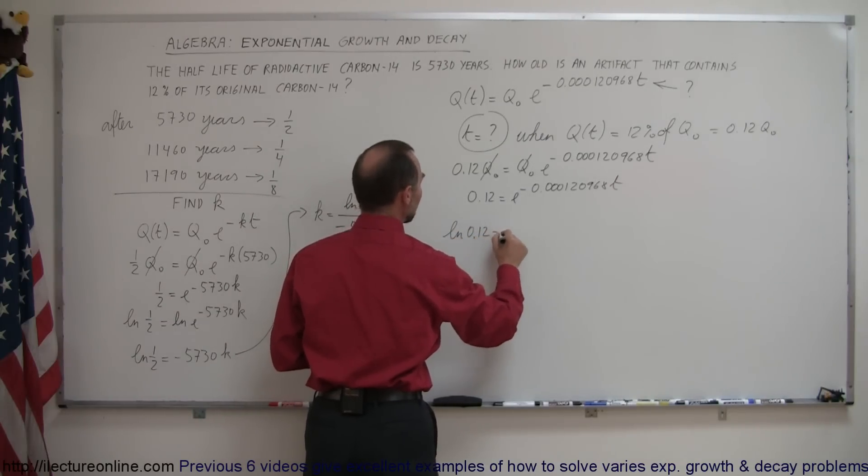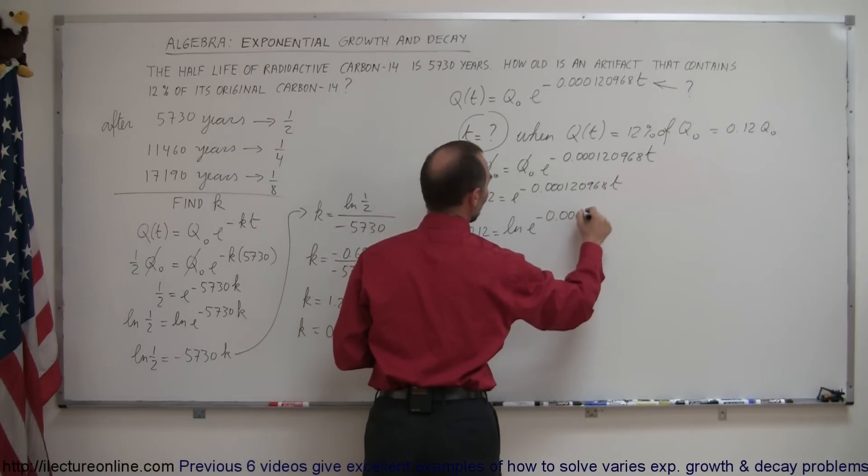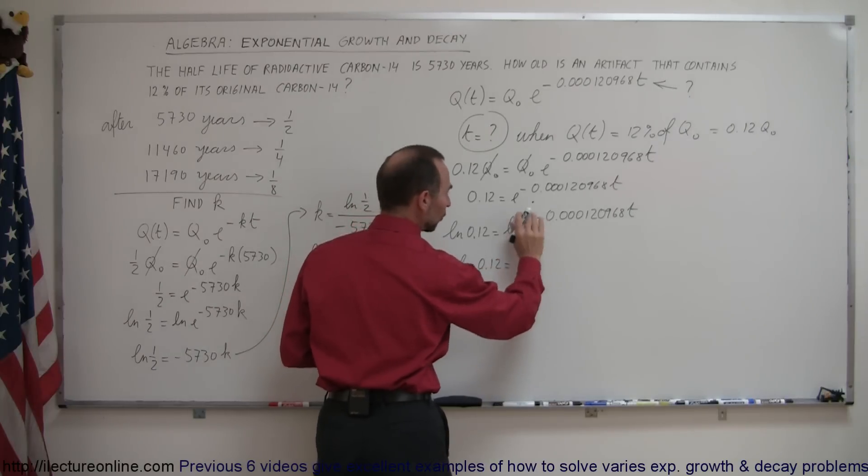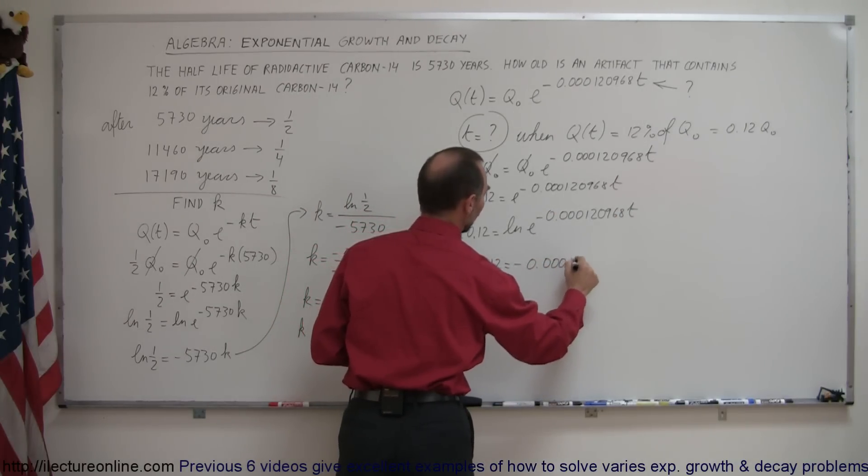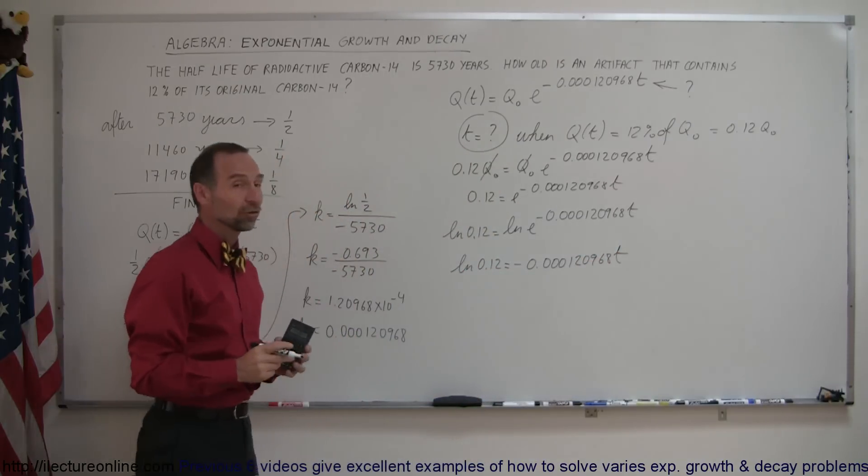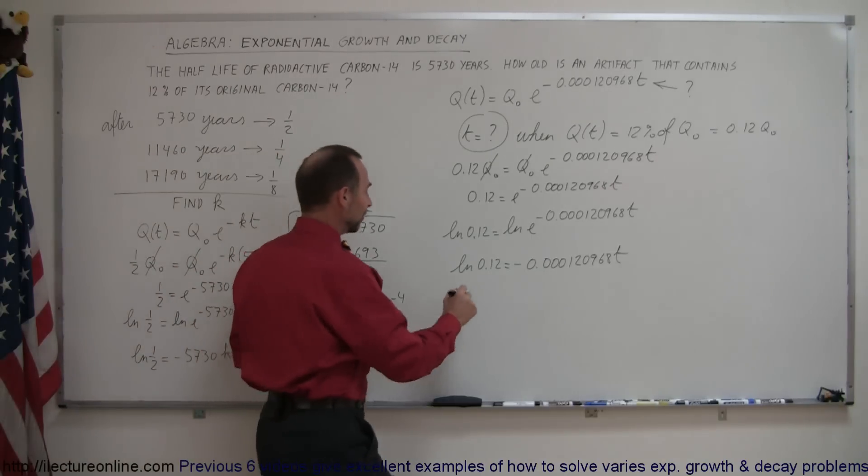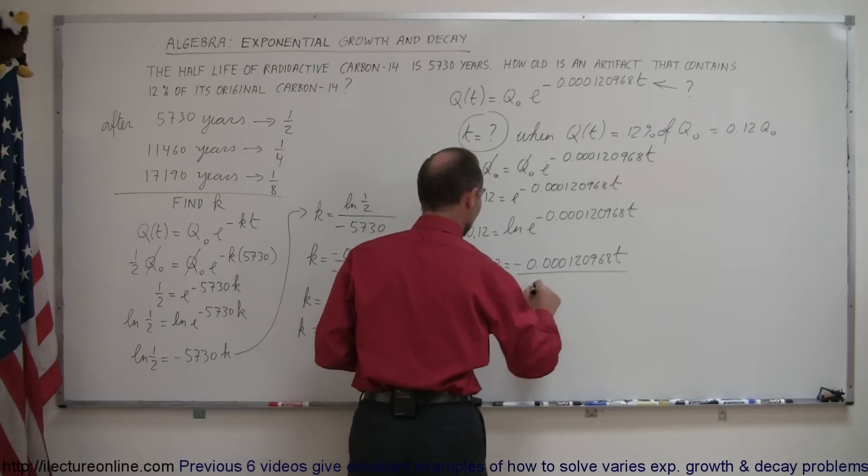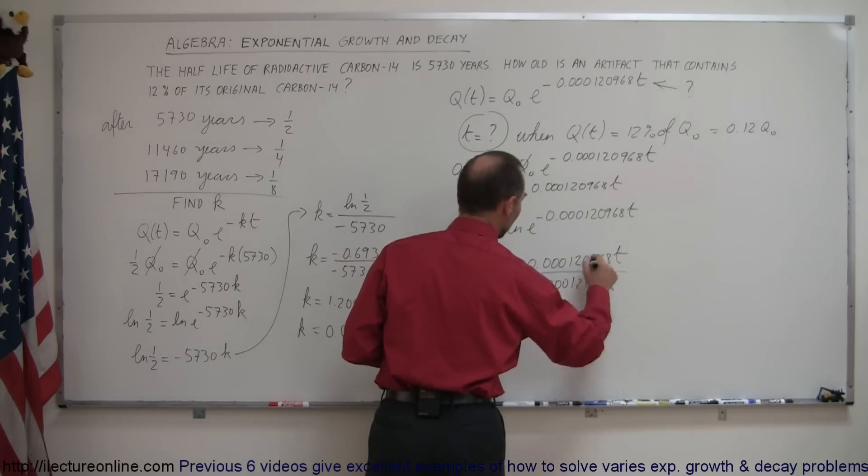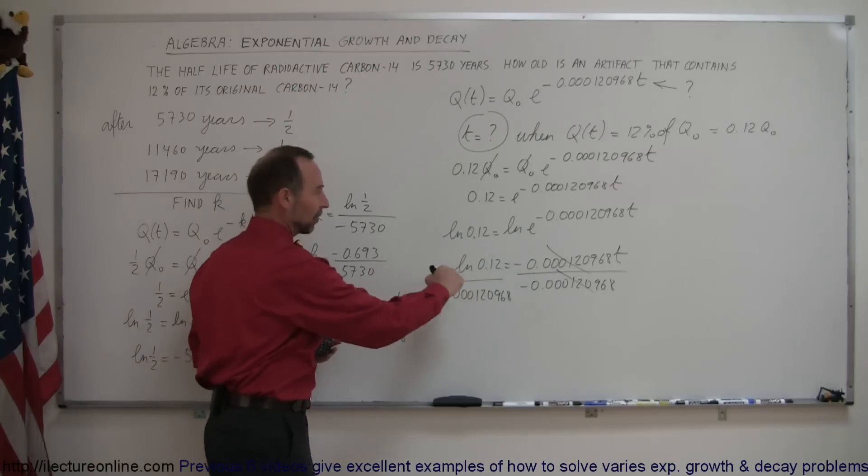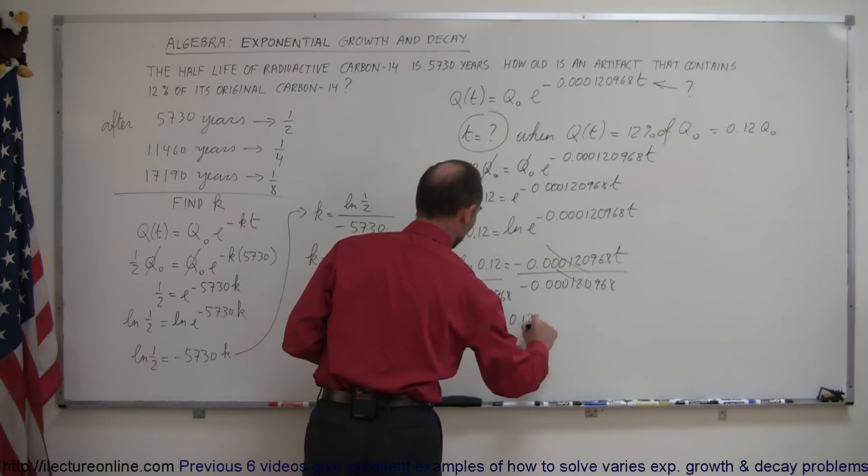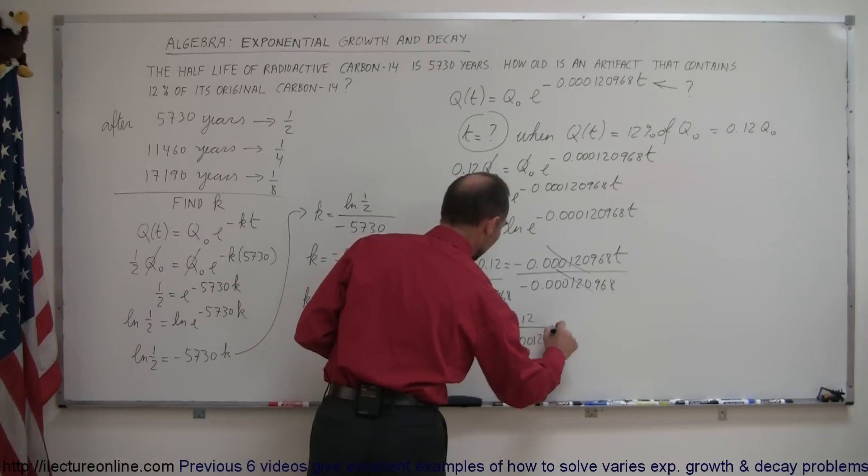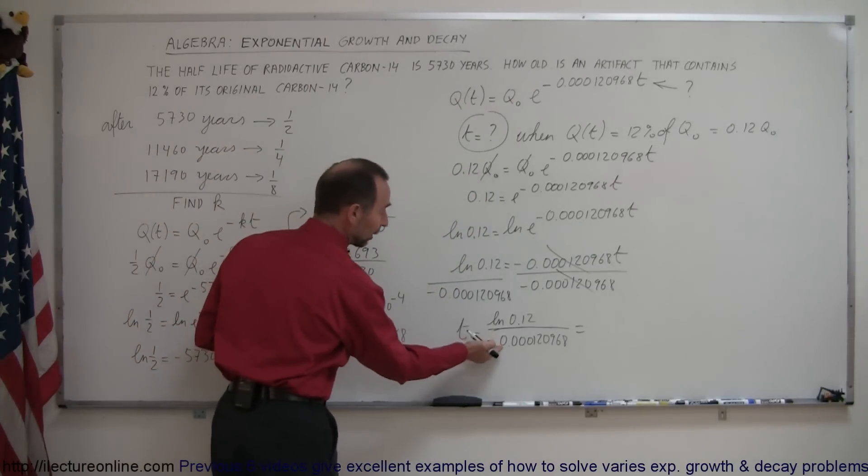So, the natural log of 0.12 equals the natural log of e to the minus 0.000120968t. Of course, this negates the exponential, so this becomes the natural log of 0.12 equals just the exponent, minus 0.000120968t. And, of course, to solve for t, we're going to divide both sides by that coefficient in front of t. Of course, that cancels out, and t simply becomes the natural log of 0.12 divided by minus 0.000120968. And, remember, whenever we take the natural log of a number less than 1, we get a negative, and that negative will cancel out with this negative.